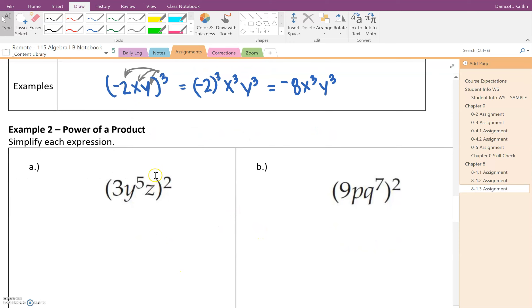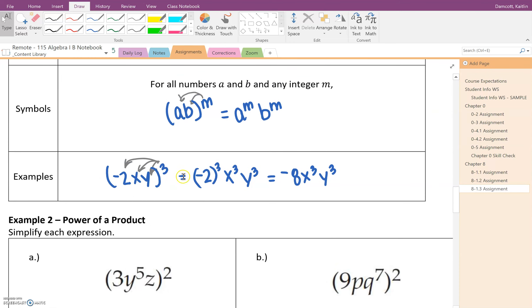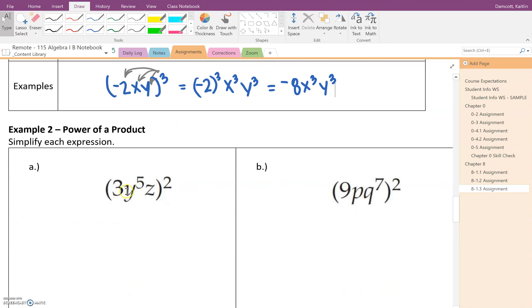Alright, now we're going to take a look at some examples that are a little bit more challenging. Like this was easy because our x and y, they weren't raised to a power. Like you could think of it as the exponent was just a 1. Now we're going to look at some examples where we have y to the fifth, or in this one we have q to the seventh.